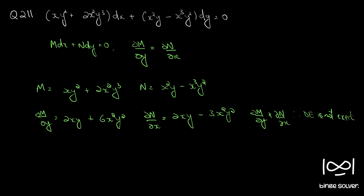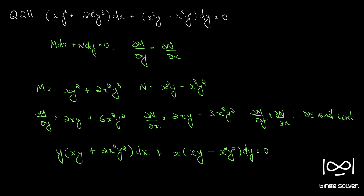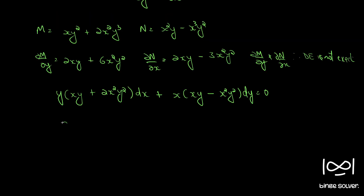If you observe the given differential equation and make some rearrangement, you can convert it into a standard form. Taking y outside gives y(xy + 2x²y²), and taking x outside gives x(xy − x²y²) dy = 0. This puts it in the format f₁(xy)·y dx + f₂(xy)·x dy = 0.